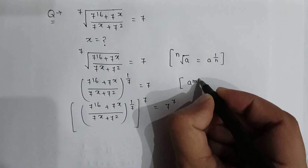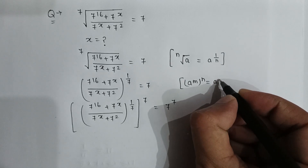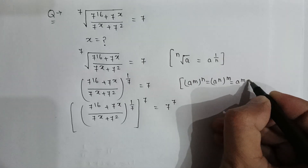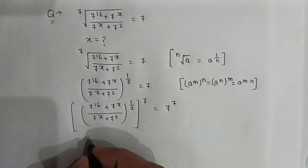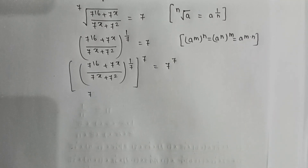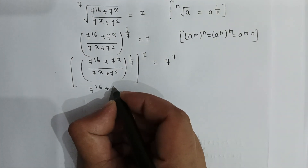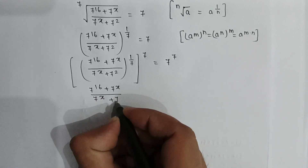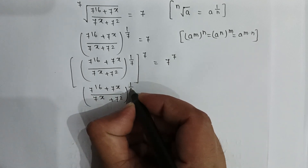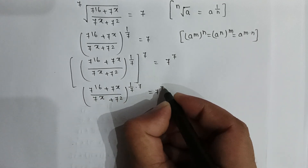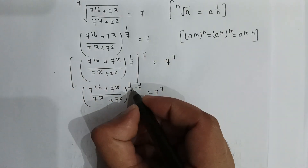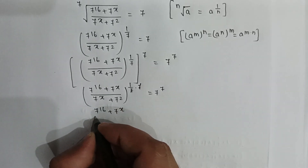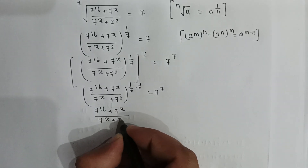As we know, if (a to the power m) to the power n is written, it equals a to the power m times n. So here the 1 over 7 and 7 cancel out, giving us: (7 to the power 16 plus 7 to the power x) over (7 to the power x plus 7 to the power 2) is equal to 7 to the power 7.